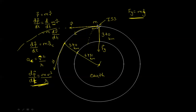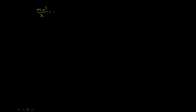This brings us to the question: what is the velocity required by the ISS to stay in an orbit of 340 km altitude? It's simple mathematics. We want to know when mv²/r equals F_g, which is mg, what is v? The beautiful part of this equation is that the mass of the ISS does not actually matter. Isolating for v, it is equal to the square root of g times r.